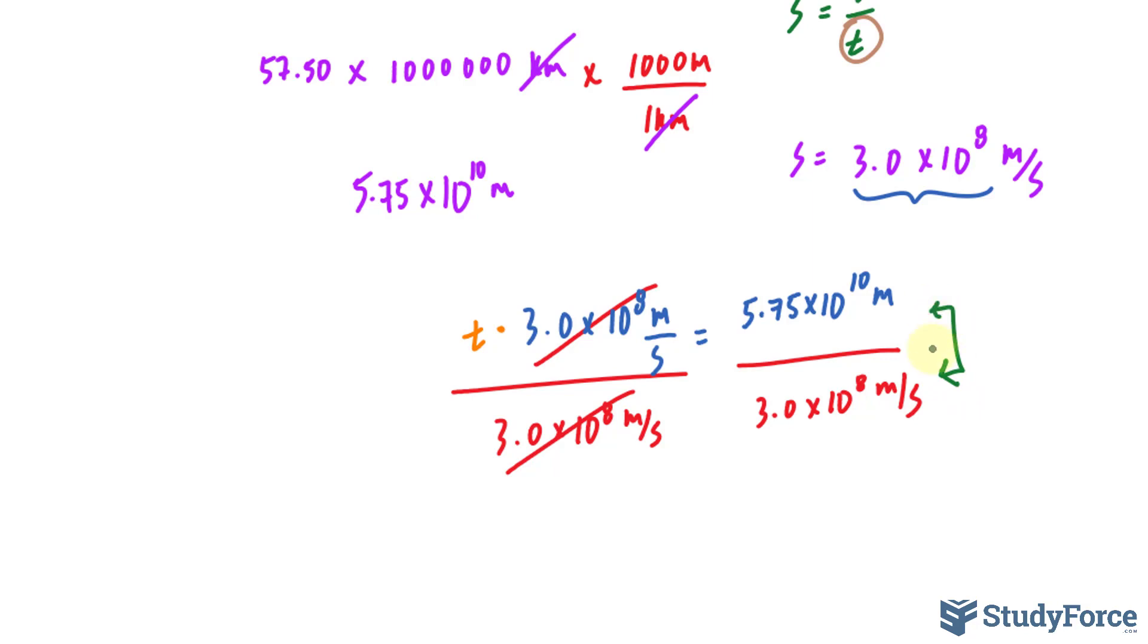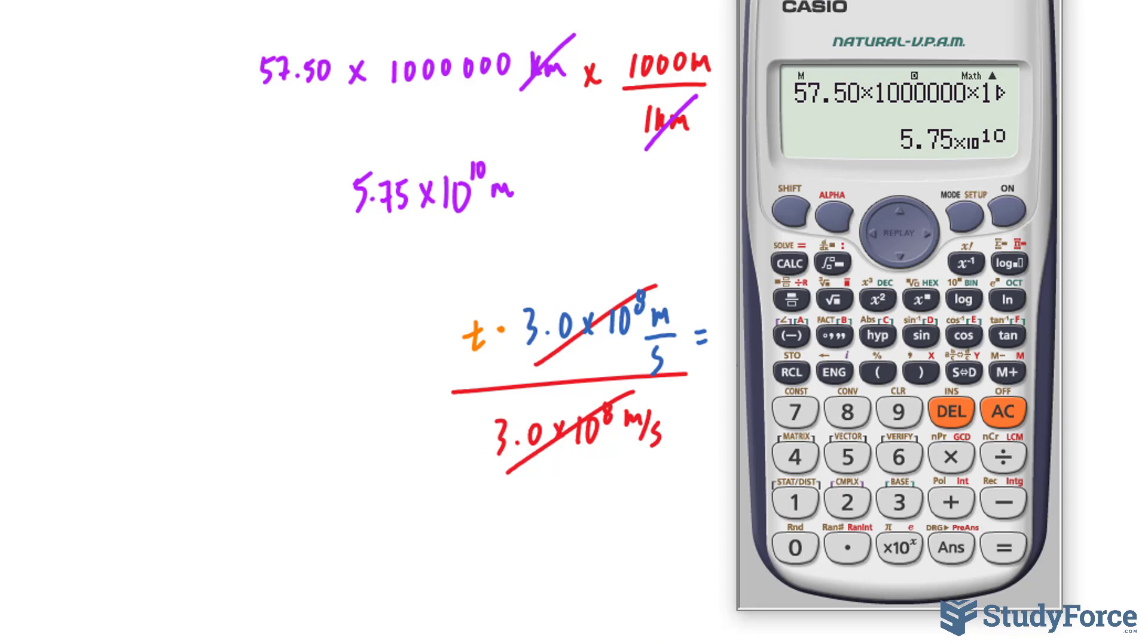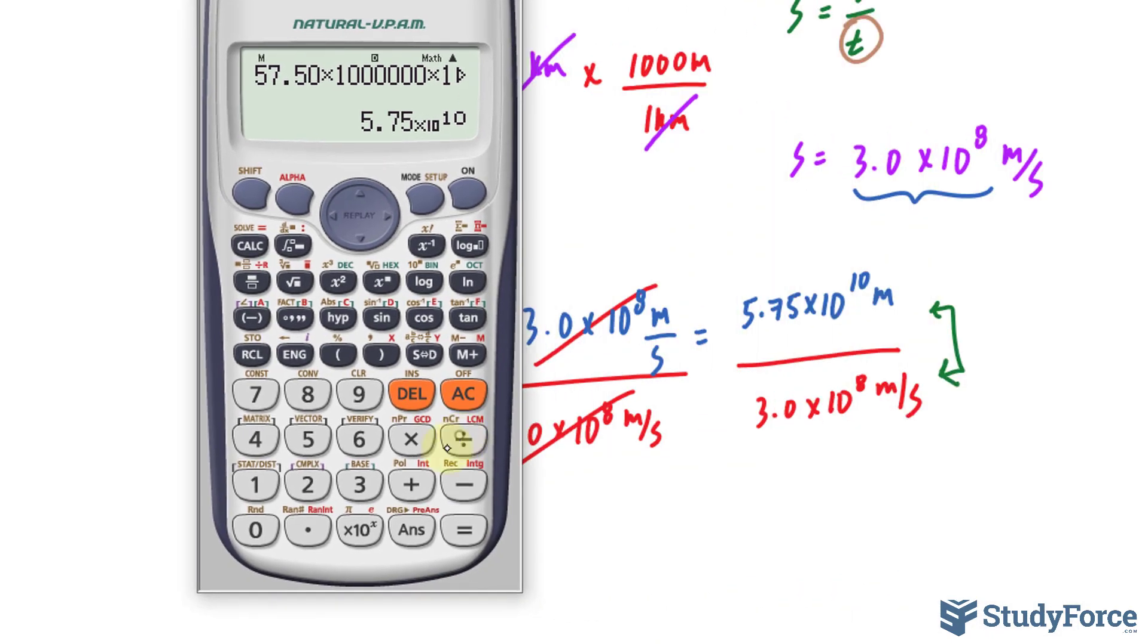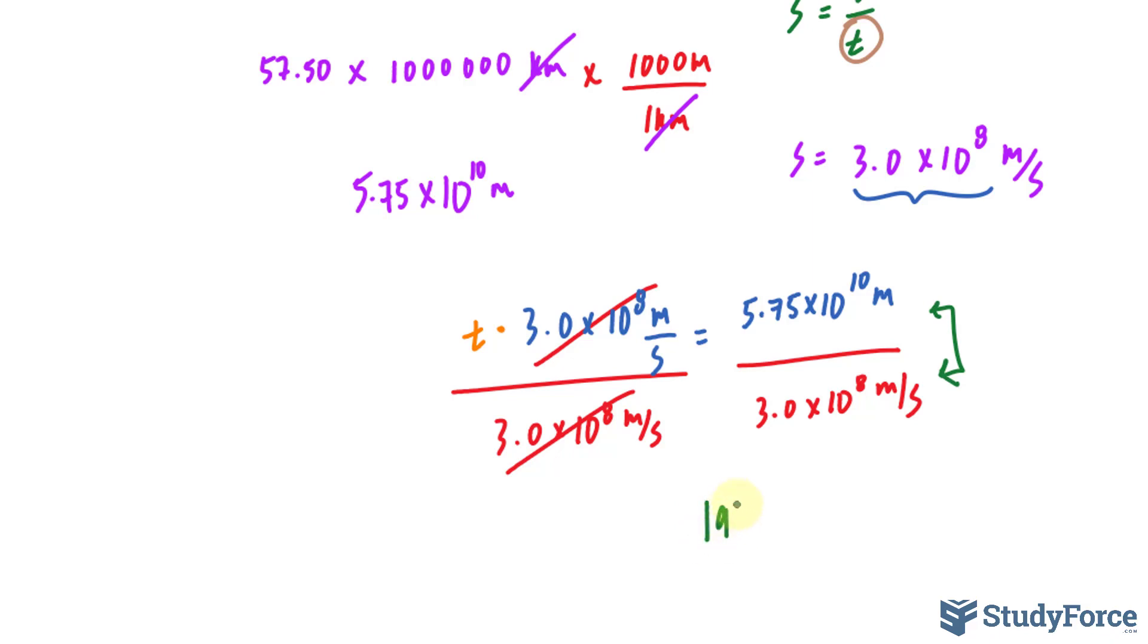Remember, we want it in minutes. So, using our calculator once more, the value on our screen divided by 3.0, and make sure that it's in parentheses, times 10 to the power of 8. We end up with 191.6 repeating seconds.